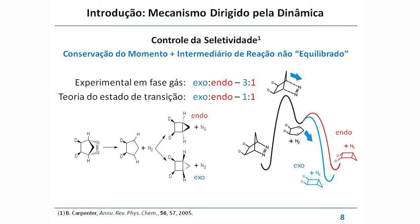Fizemos a deuteração — eles estão numa posição syn ao anel. Quando ocorre a eliminação de N2, ocorre a formação de endo e exo. Pela teoria de estado de transição, esse é um produto degenerado com único estado de transição — a seletividade seria 1 para 1. Não há como ter outro resultado pela teoria de estado de transição. Entretanto, quando a reação é feita em fase gás, determina-se que o exo tem uma proporção de 3 para 1 com relação ao endo.